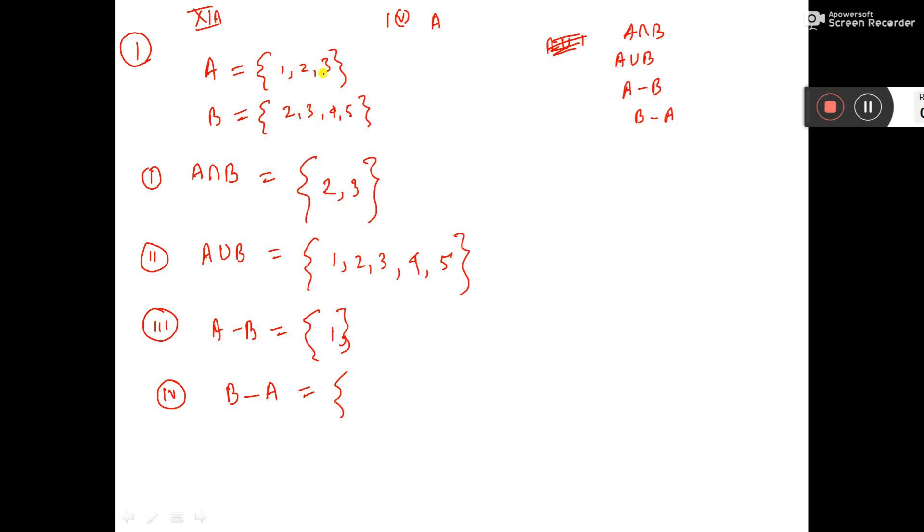3, 3 is subtracted? Yes. 4, 4 is subtracted? No. So take 4. Then 5, 5 is subtracted? No. Then take 5. So this is B minus A.